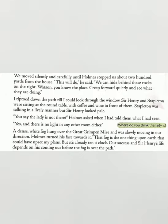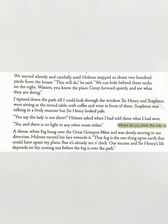We moved silently and carefully until Holmes stopped us about 200 yards from the house. 'This will do,' he said. 'We can hide behind these rocks on the right. Watson, you know the place — creep forward quietly and see what they are doing.' As they were moving silently, Holmes suddenly stopped them and suggested hiding behind the rocks, asking Watson to move ahead and observe what the suspects were doing.